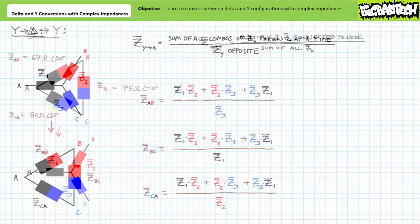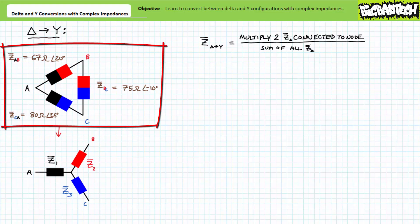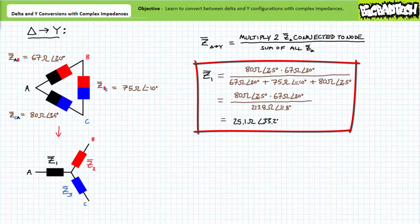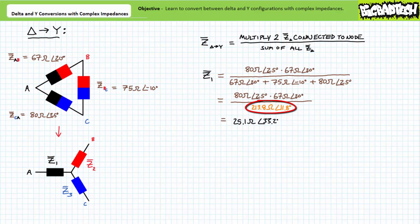Here is a three-terminal delta configuration featuring an impedance of 67 ohms at 20 degrees between nodes A and B, 75 ohms at negative 10 degrees between nodes B and C, and 80 ohms at 25 degrees between nodes C and A. To solve for Y impedance Z1, multiply Z-C-A and Z-A-B, then divide by the sum of all delta impedances. The formula suggests Z1 is 25.1 ohms at 33.2 degrees attached to node A. The denominator is the same for all three conversions, so just reuse it.